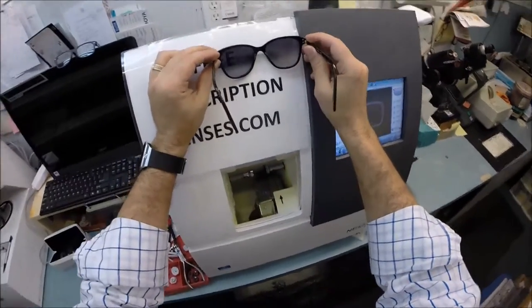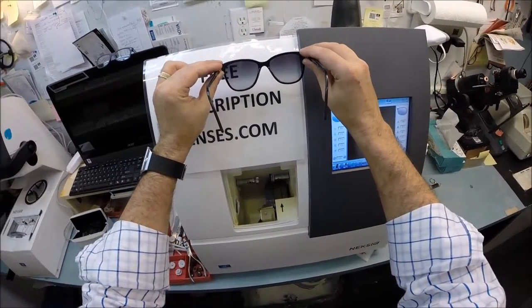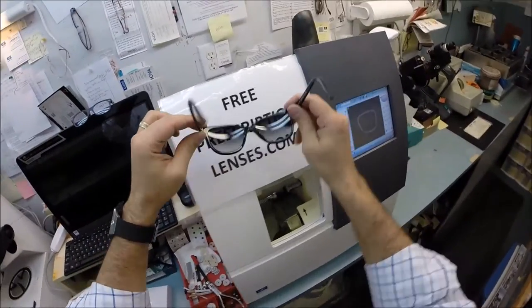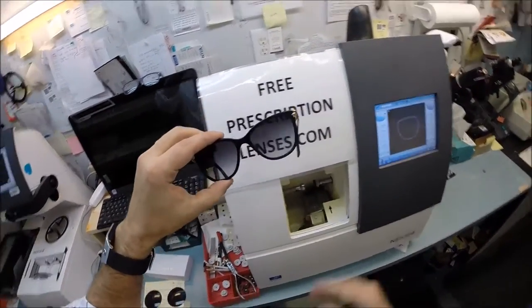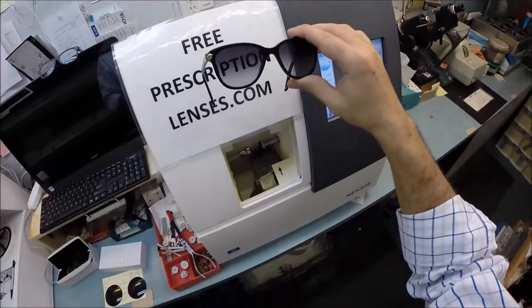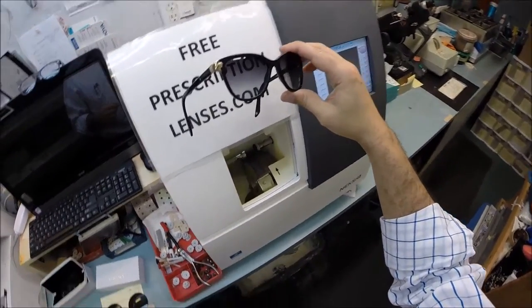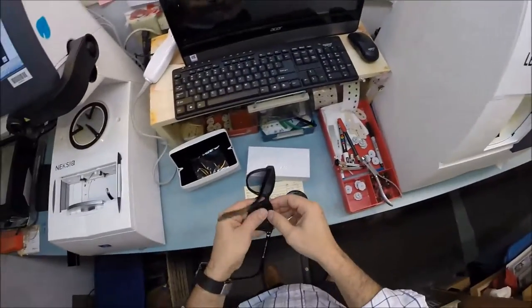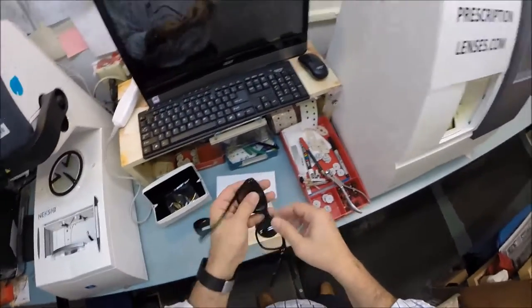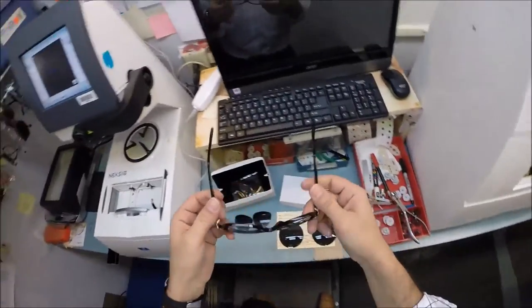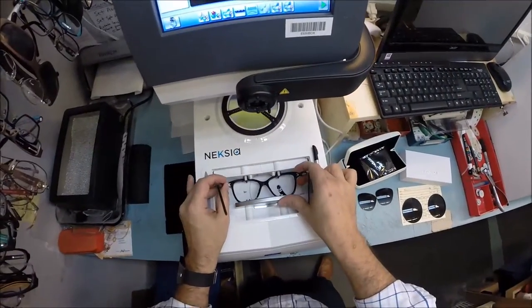Your frame actually comes with a gradient lens, dark at the top that fades to clear, but we're going to put a solid polarized gray lens in there because you're going on vacation later this week. I'm going to take out your original sunglass lenses.